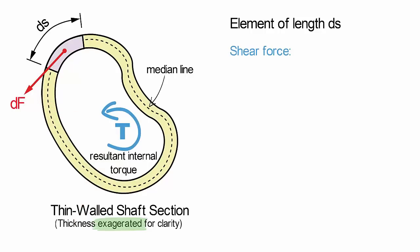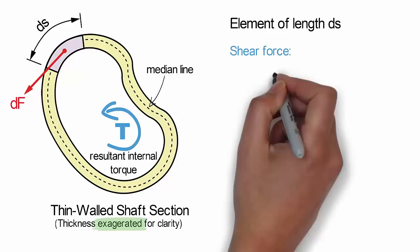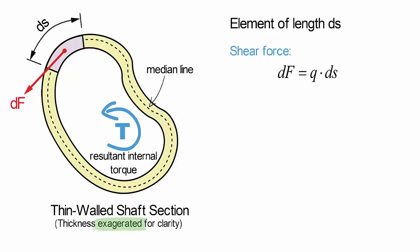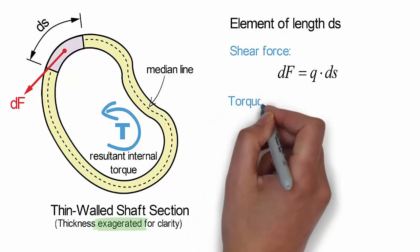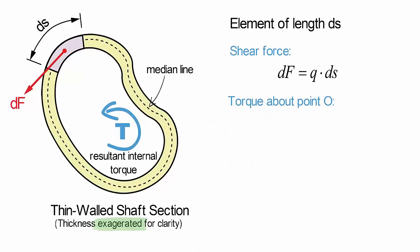The shear flow acting on this element will produce a resultant force which we will call df. Because the element is infinitesimal, the curvature of the path ds is negligible and the resultant force is precisely equal to the shear flow q multiplied by the element length ds. This resultant shear force will generate a moment dt that contributes to the overall resultant torque of the cross-section.